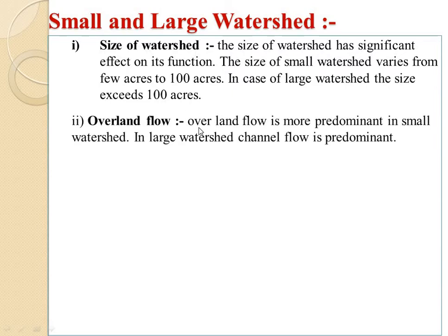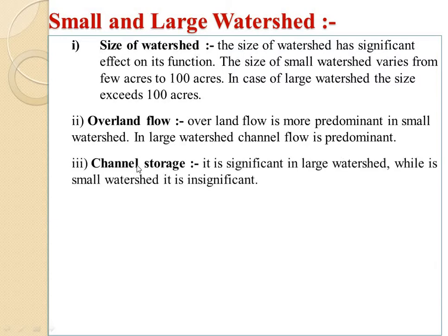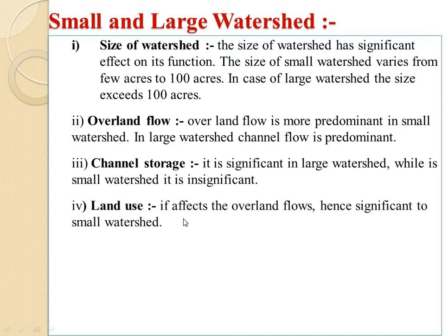Overland flow is more predominant in small watersheds. In large watersheds, channel flow is predominant. Channel storage is significant in large watersheds. Land use affects overland flow, hence it is significant to small watersheds.